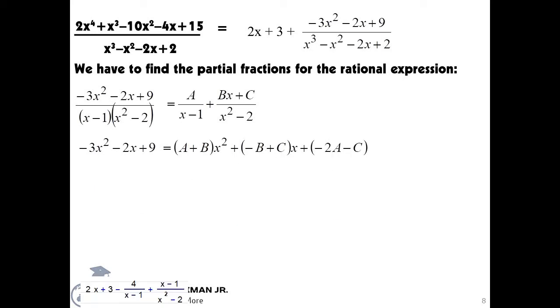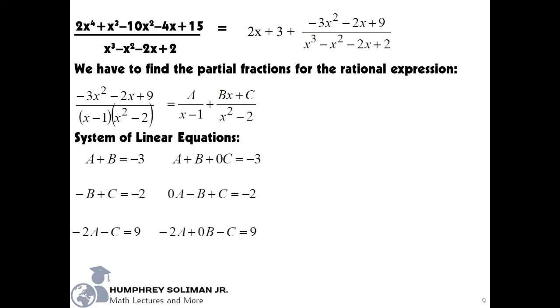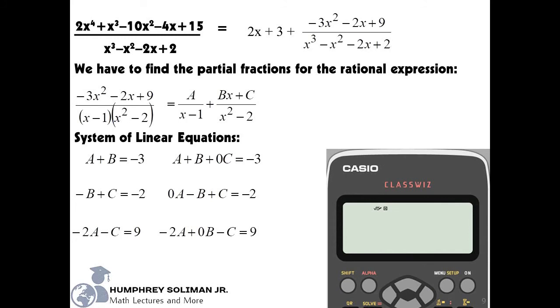We can now get a system of linear equations from here. We will get our first equation by equating the coefficients of x squared from both sides. And then, we will equate the coefficients of x to get our second equation, and so as the constant terms to get our third equation. It would be better if we can write a zero as the coefficient of the missing terms in our system of linear equations, so that we don't miss it out in using our Casio ClassWiz calculator.